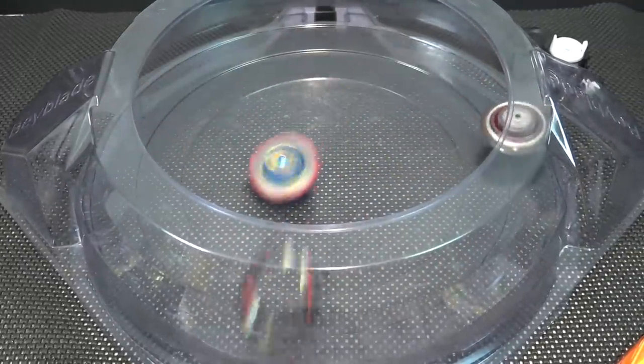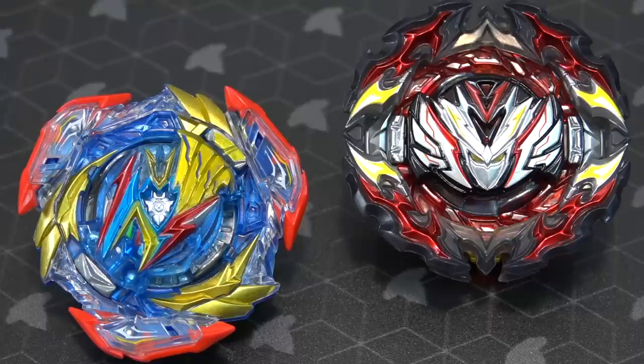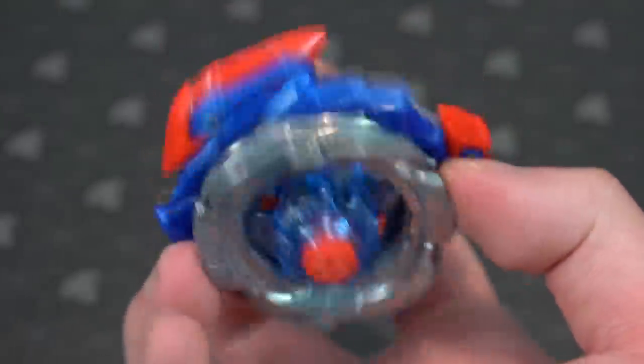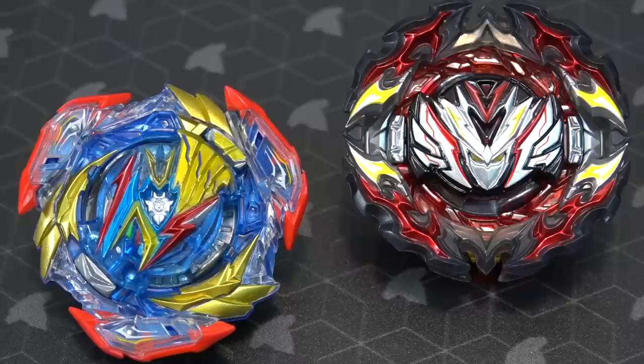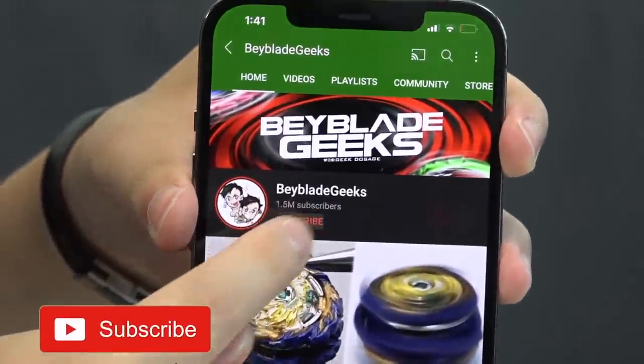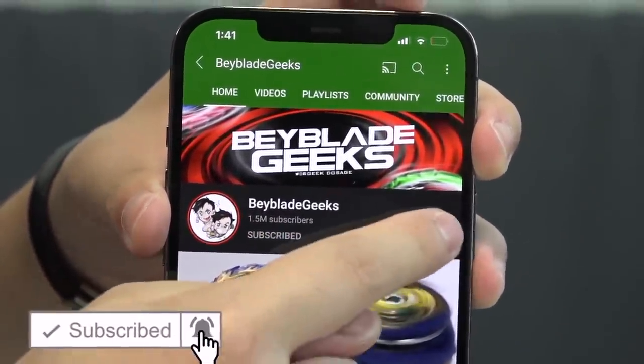It's really cheap to get too, so for around 20 bucks you get yourself one of the best DB defense types you can get. So it bearing the Valkyrie name, we had to put it up against the Ultimate Valkyrie. Does it have a chance? Before we get started with this battle, make sure you guys subscribe to the channel and click on that bell notification icon. Check us out on Instagram at geekdosage and on TikTok at beybladegeeksofficial.